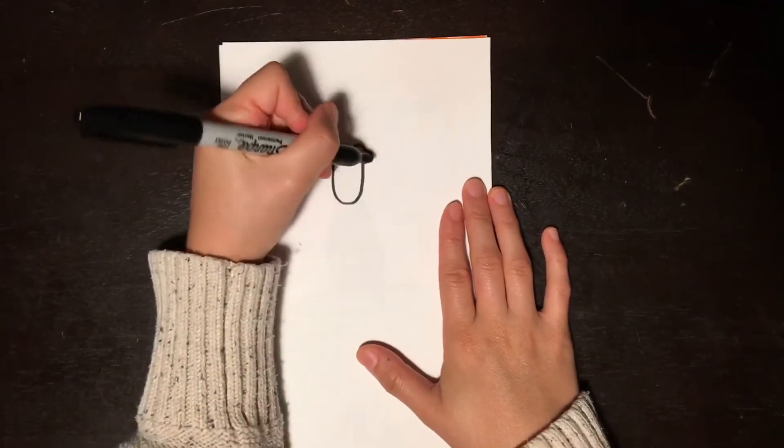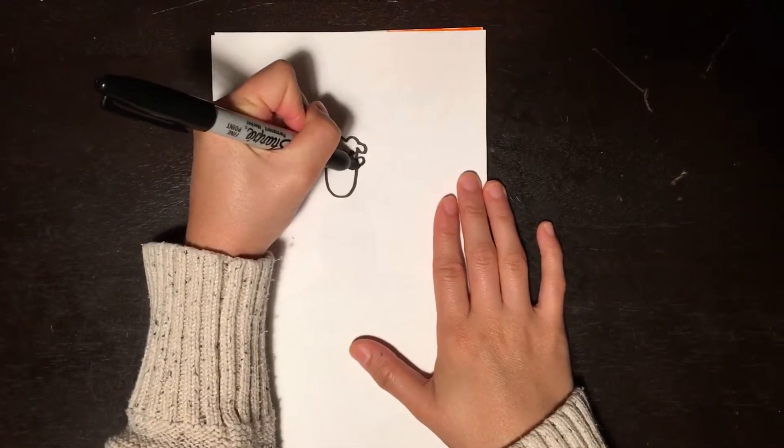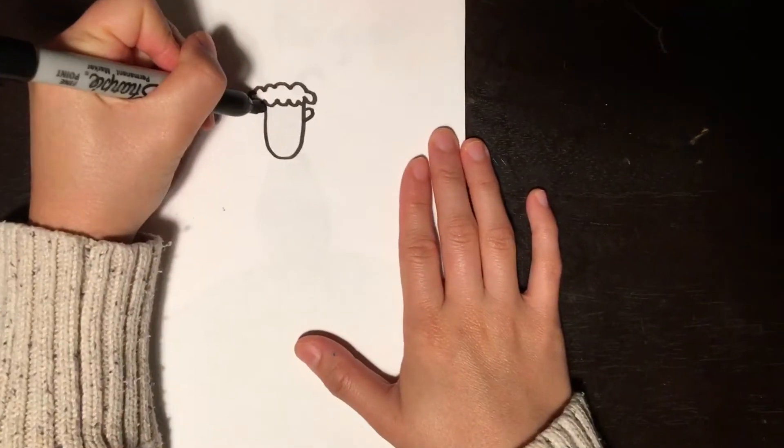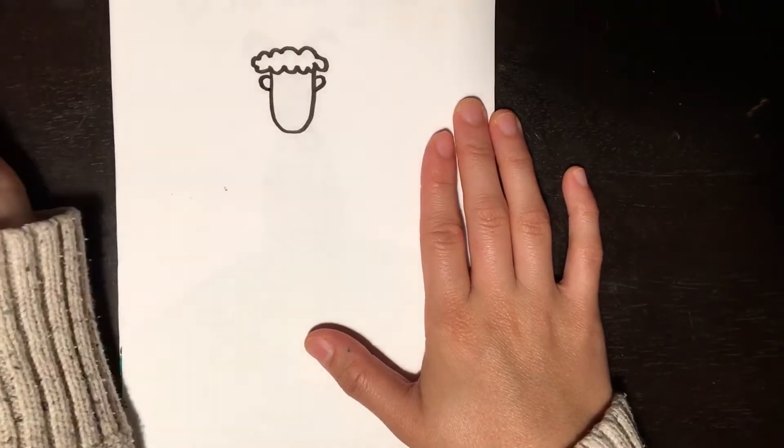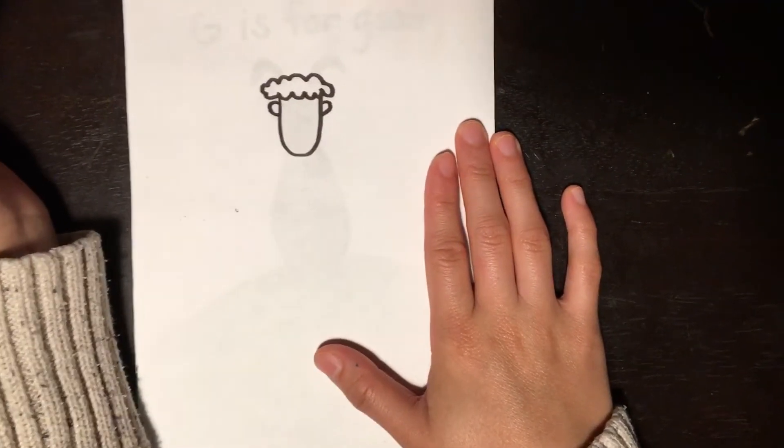Next I'm going to do a backward C over here, a regular C over here. So it looks like two ears sticking out.